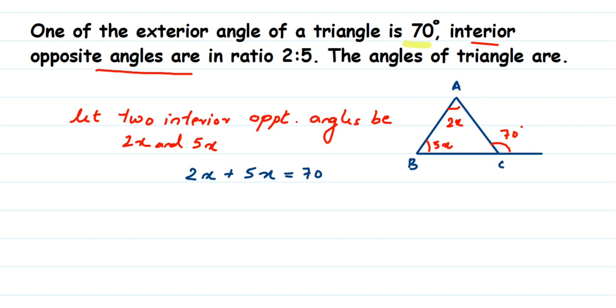So 2x plus 5x is 7x. So 7x is equal to 70 degrees. We want the value of x to transpose 7 to the other side. 7 is in multiplication when you transpose comes in division. So 70 divided by 7 is 10. So therefore, we got the x value is equal to 10.